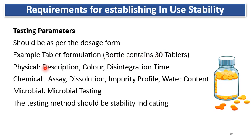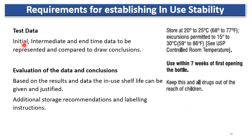For example, for a tablet formulation where a bottle contains 30 tablets: physical characteristics like description, color, and disintegration time are required to be tested; chemical parameters include assay, dissolution, impurity profile, and water content; and microbial testing should be done at specific intervals and at the end of the in-use stability period. The testing methods used must be stability-indicating. Test data from initial, intermediate, and end time points are to be represented and compared to draw conclusions on in-use stability.